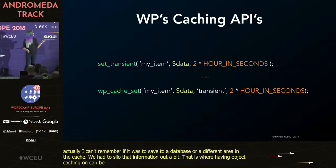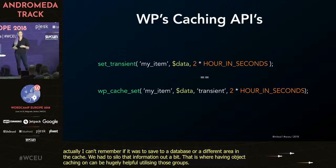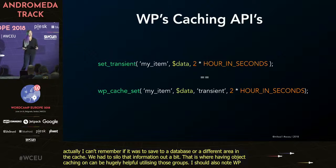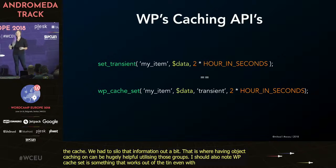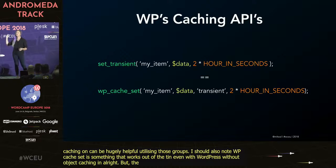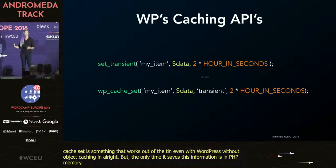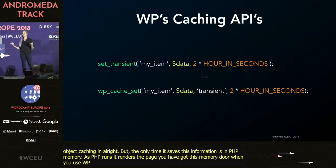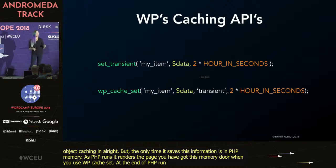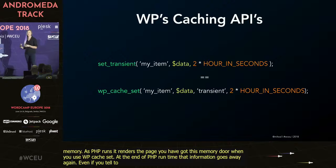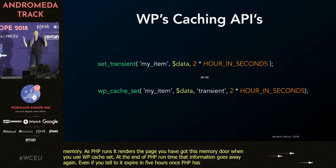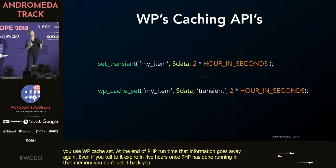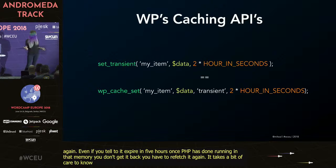If you have object caching enabled, set_transient under the hood actually utilizes wp_cache_set where the group is set to 'transient.' Also note that wp_cache_set works even without object caching installed, but then it only saves information in PHP memory. As PHP runs and renders the page, that memory is stored — but at the end of PHP runtime, that information goes away. Even if you tell it to expire in five hours, once PHP is done running, you don't get it back. Stick with transients unless you have a more complex and managed setup.